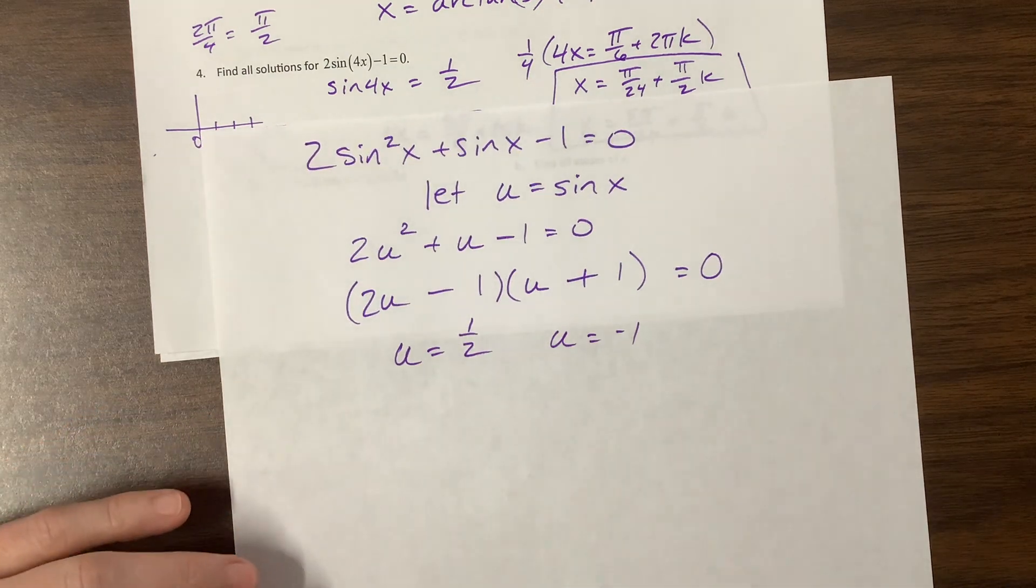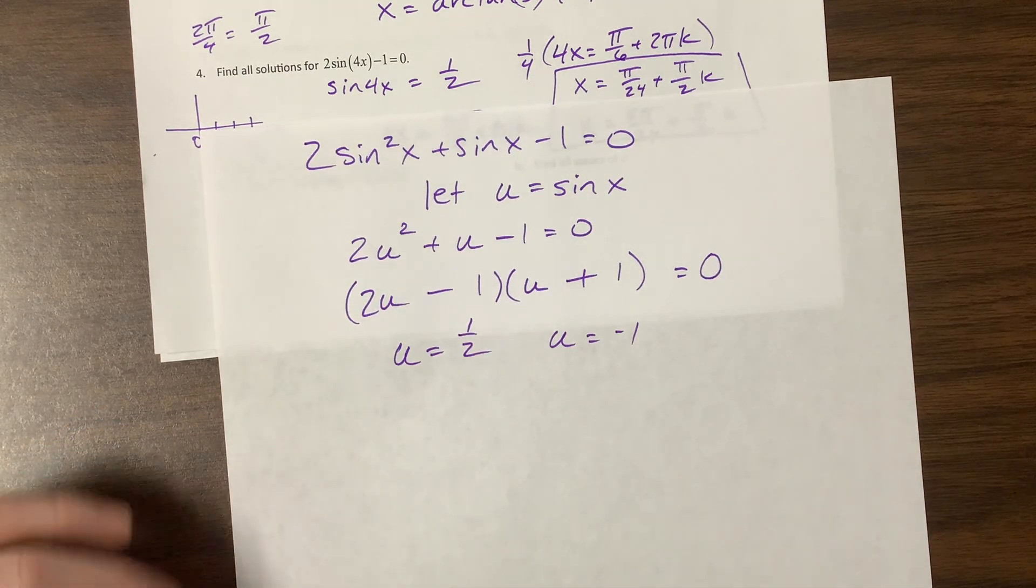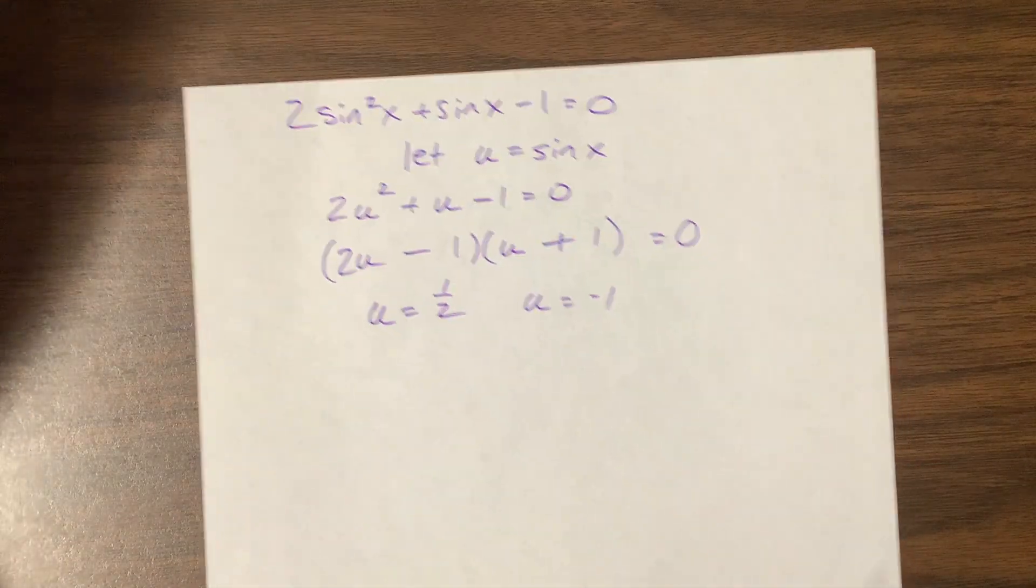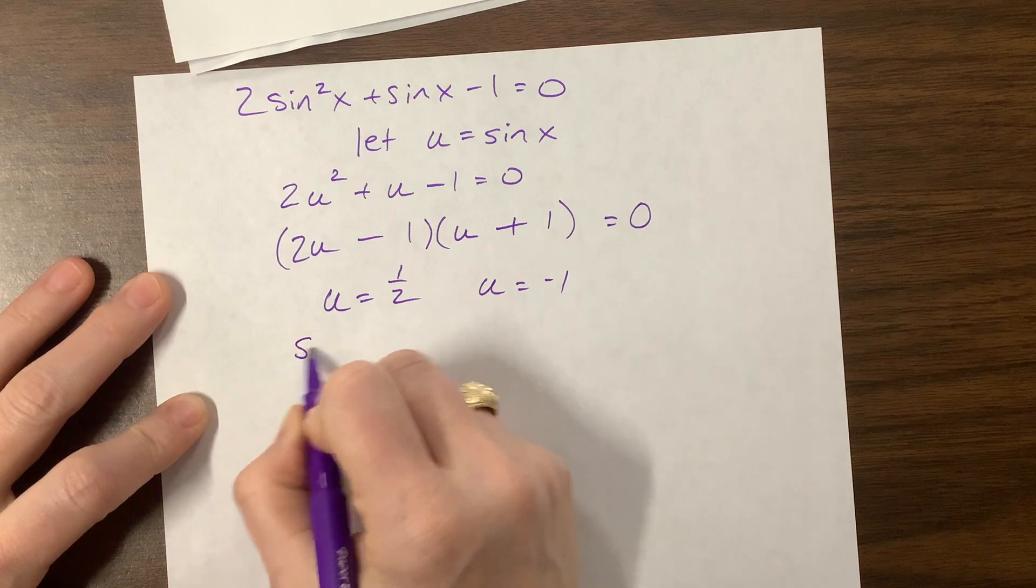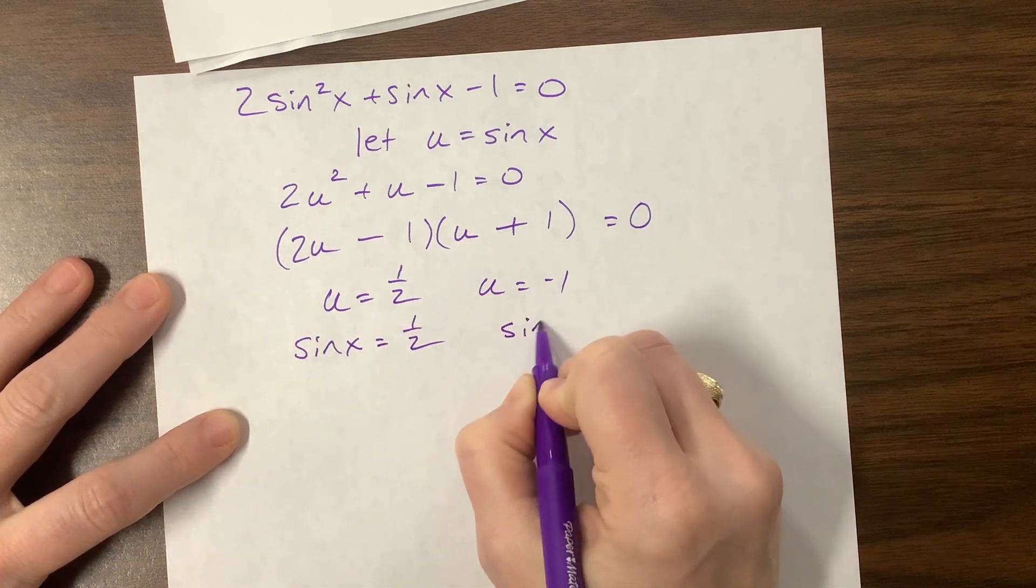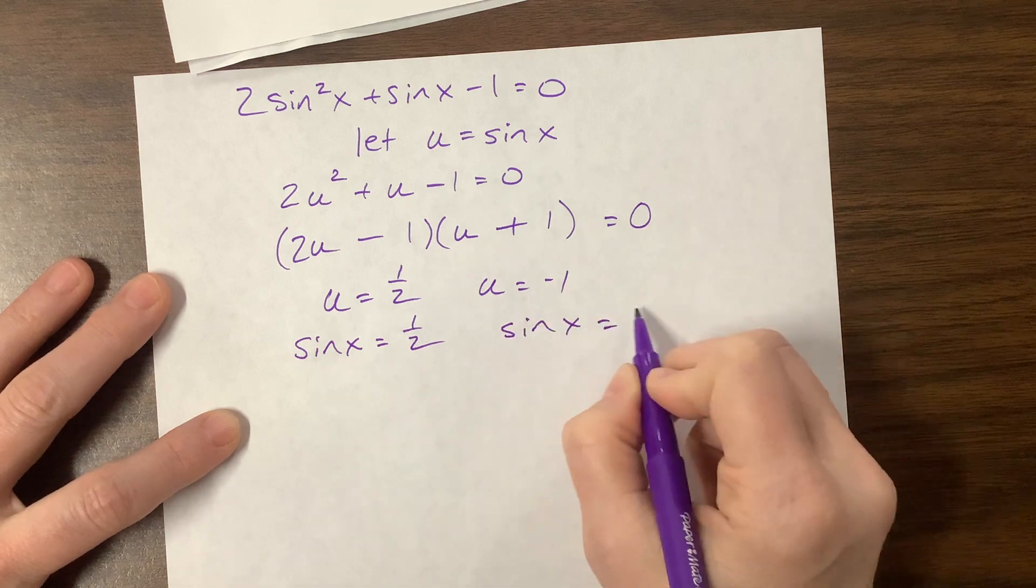But they didn't ask me to solve for u. They asked me to solve for x. X comes from sine of x. To solve for x, we need to rewrite this as sine. We need to take out u again and put this back in.